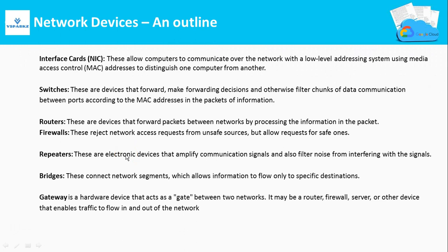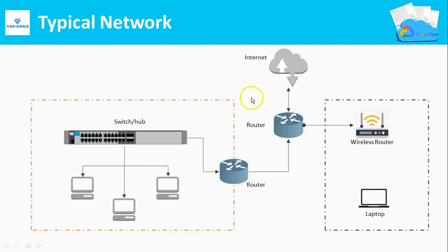Next is the router. A router is a network device that forwards packets between networks. You can compare a router to a traffic police officer — a traffic police routes traffic from one side to the other, and similarly a router distributes traffic from one network to another. You can see that in this diagram: this is one network, this is another network, and routers are in between to distribute the traffic.